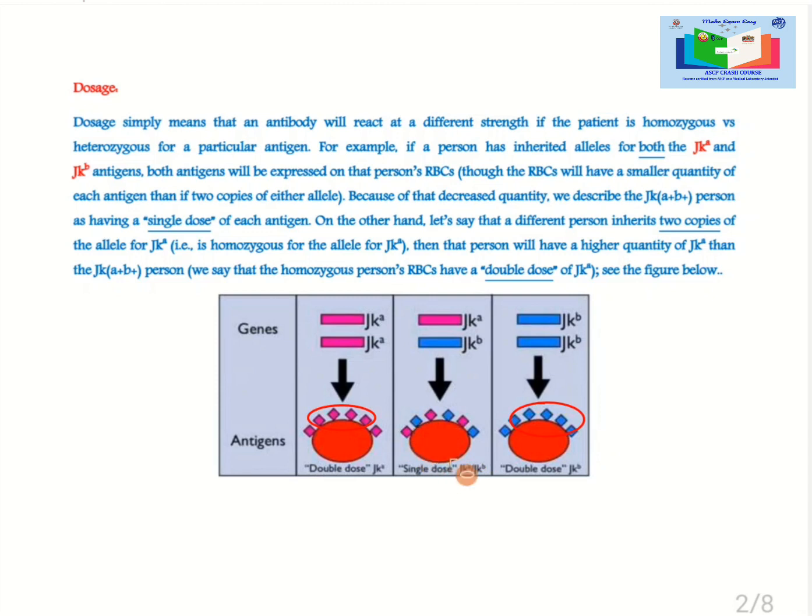In the middle one, this is an example of single dosage of JKA and JKB antigen expression, where both antigens such as JKA and JKB are expressed and this is called single dosage.